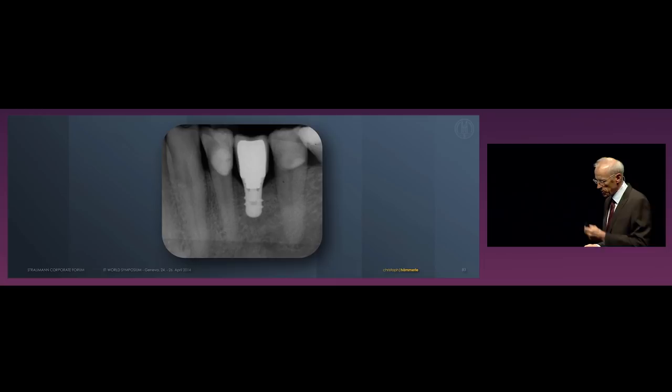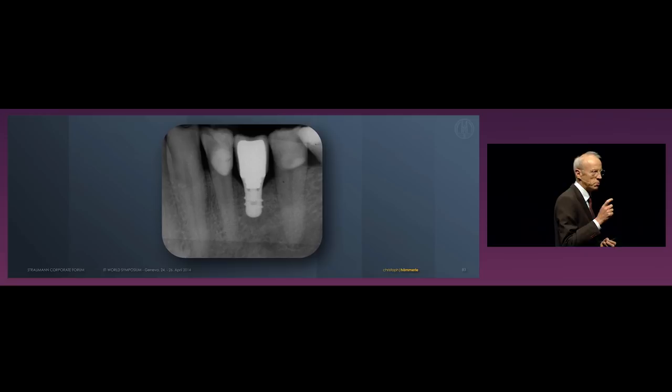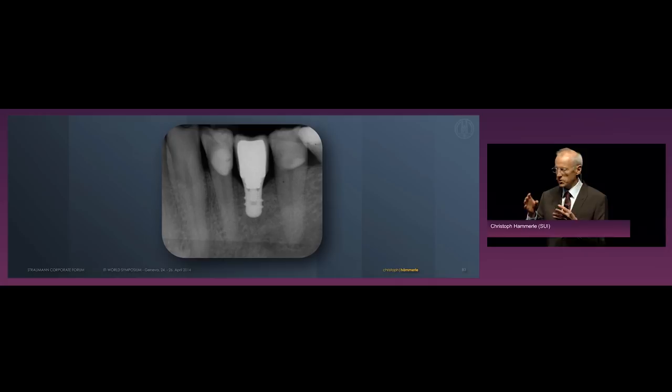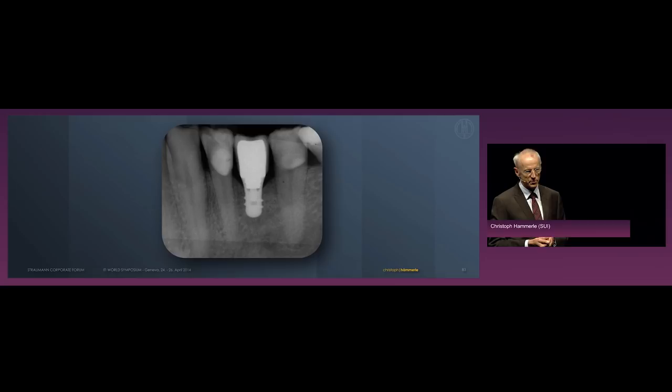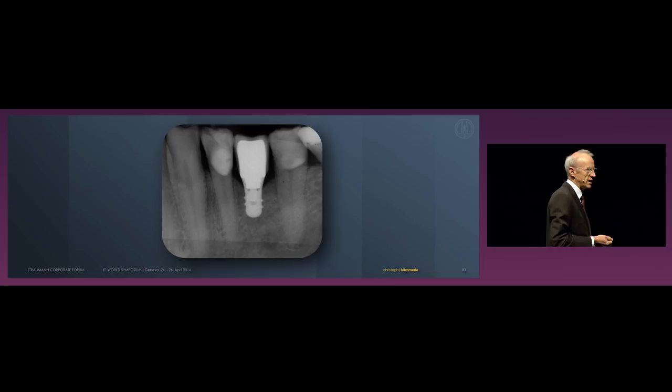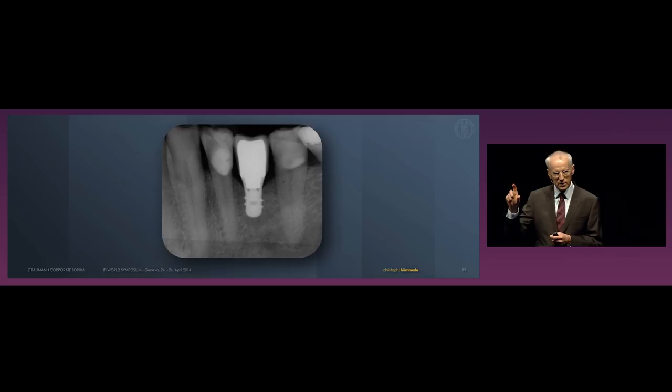Then maybe you also say there's more bone available, so you should use a longer implant because there is more bone. I will ask you: there are situations where you could easily place an implant of 10 millimeters, but what if you have a clinical situation where you have 30 millimeters of bone, somewhere in the anterior mandible? Will you then place a 30 millimeter implant? I imagine not — they're very hard to buy. So the critical element is not how much bone is available.